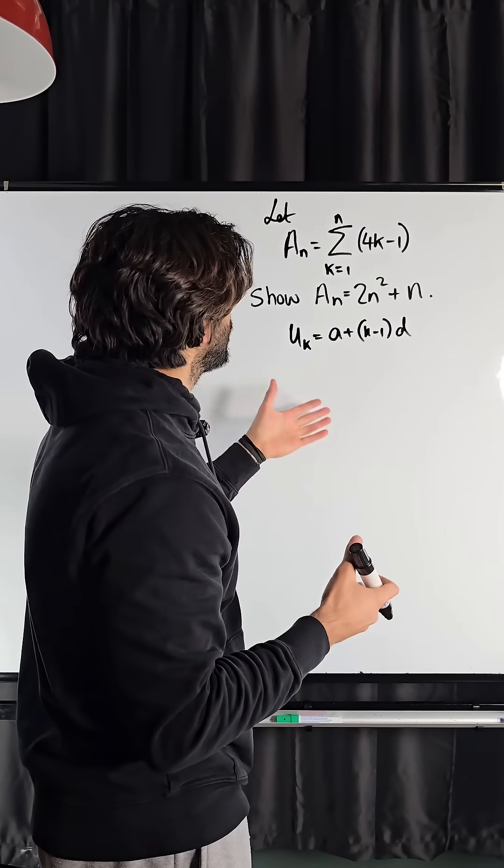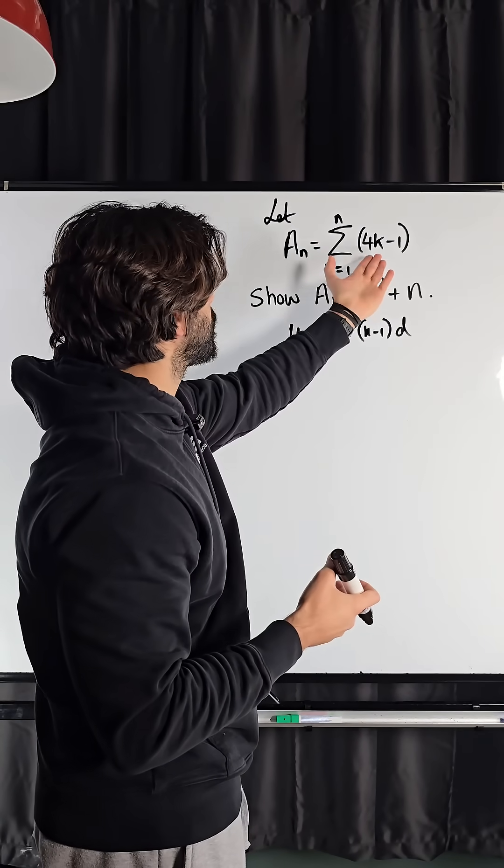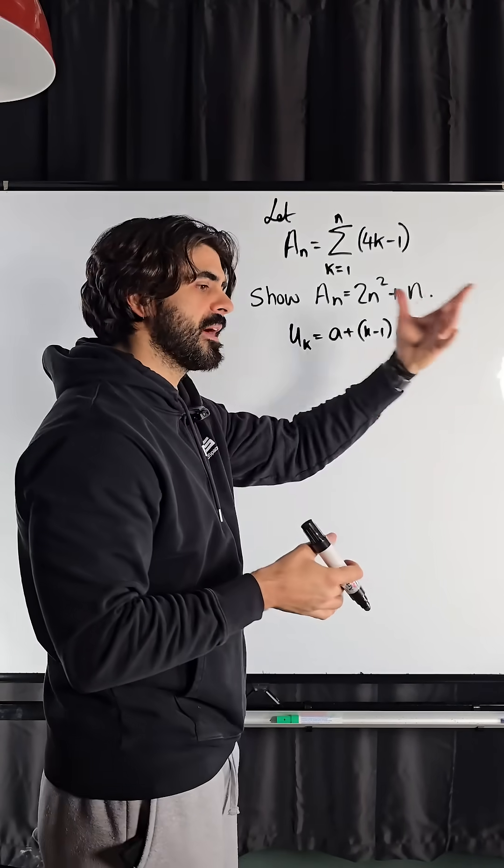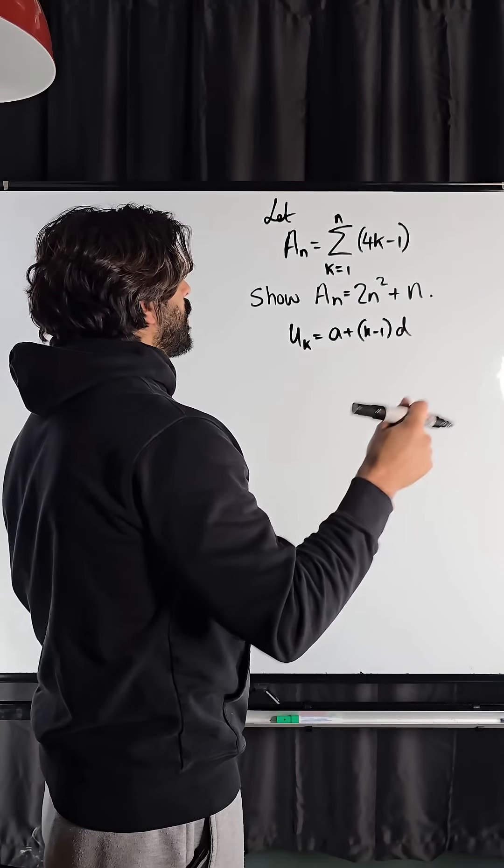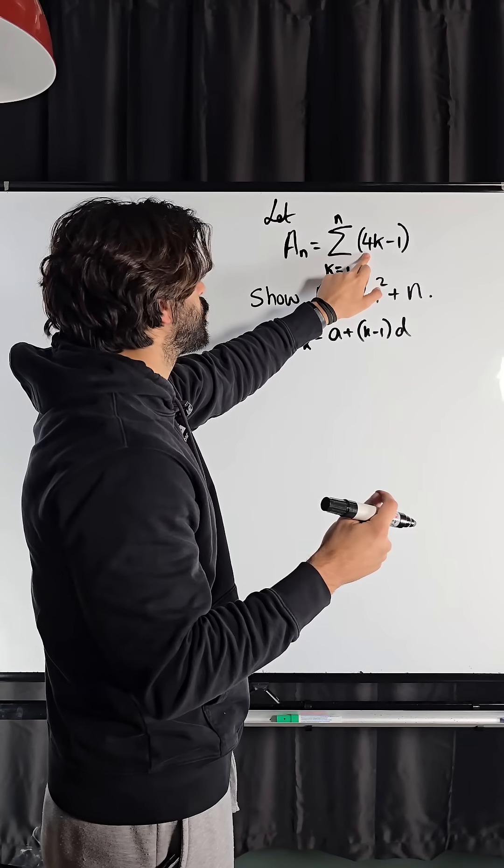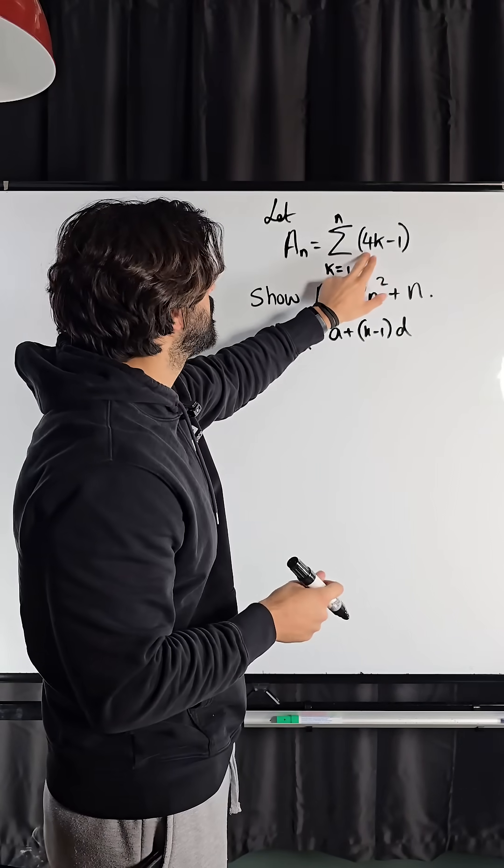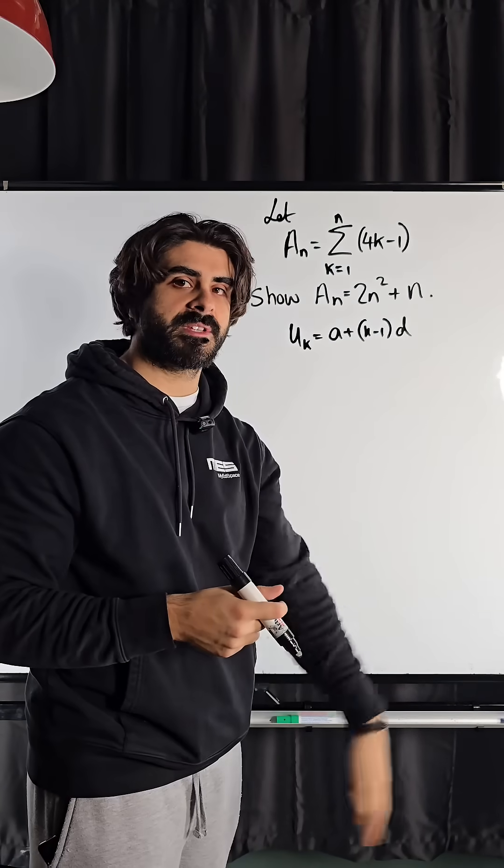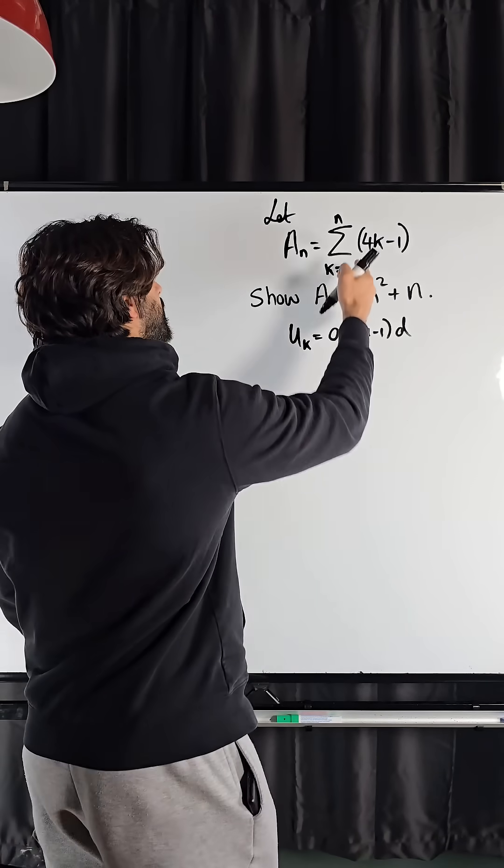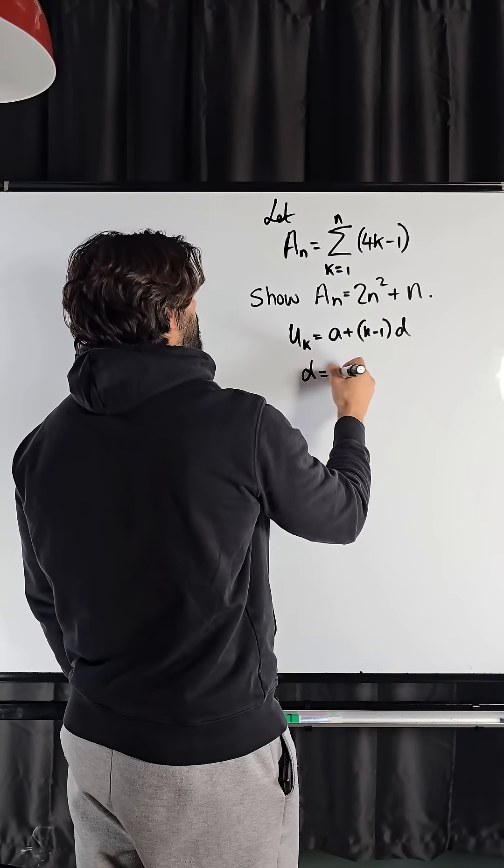So the question is, how can you identify what a and d are just from this? Well, you could go back to GCSE and you would know that the coefficient of the unknown tells you what the sequence is going up by because 4k just means the 4 times tables. So immediately, I know that d is 4.